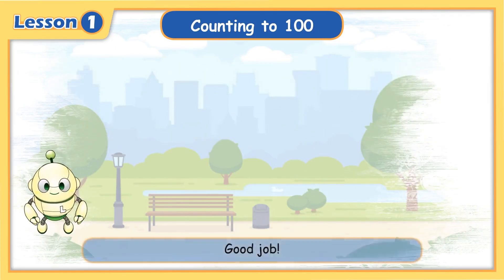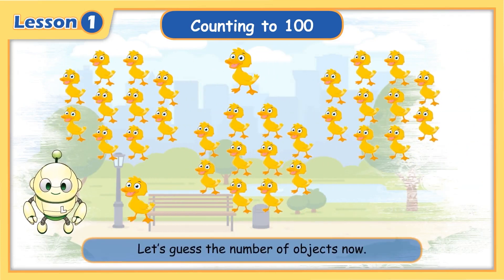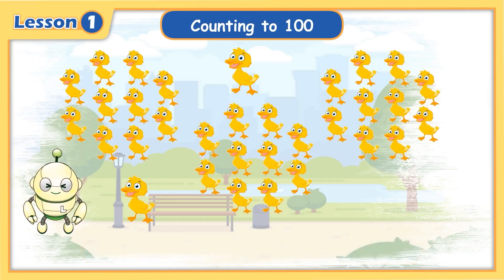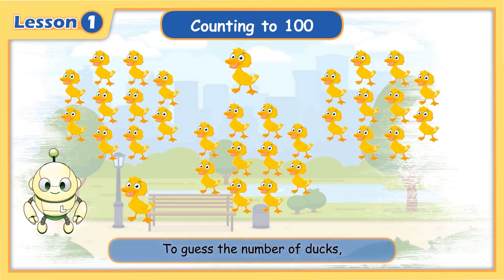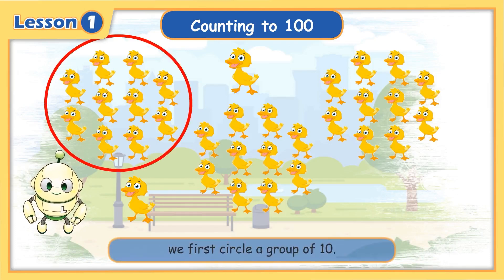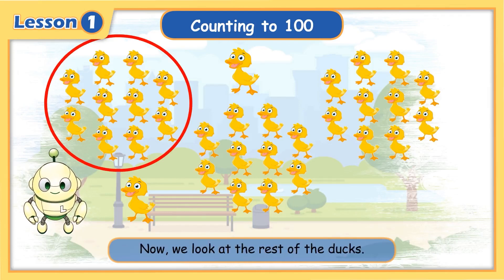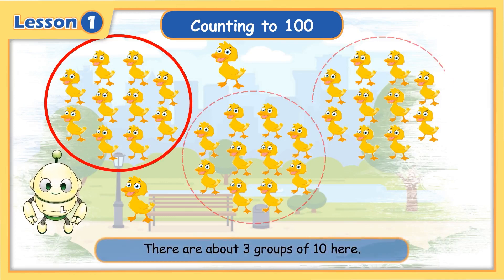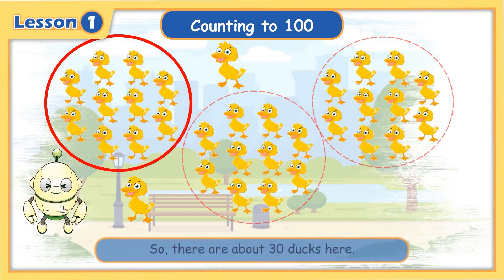Good job! Let's guess the number of objects now. Without counting, how many ducks do you see here? Guess the number of ducks. We first circle a group of 10. Now we look at the rest of the ducks — there are about 3 groups of 10 here. So, there are about 30 ducks here.